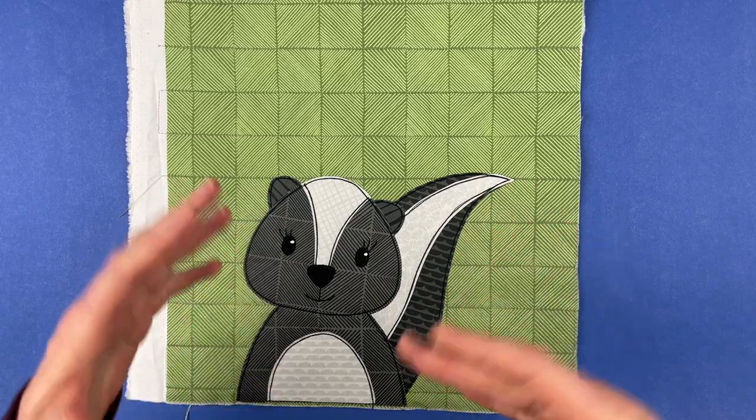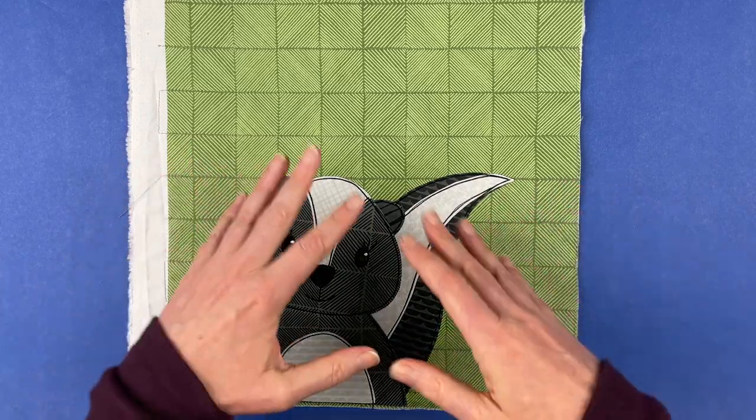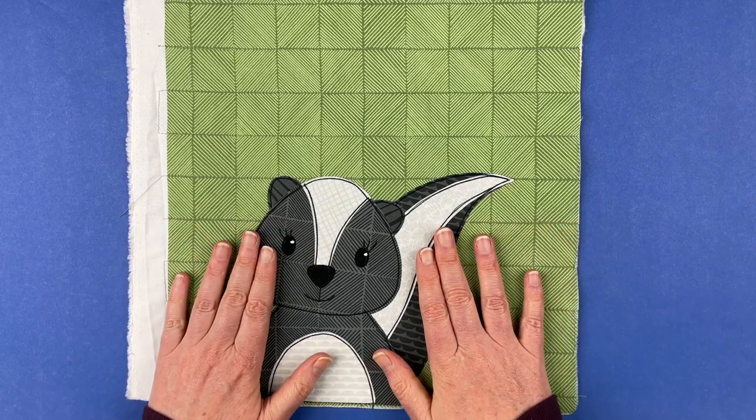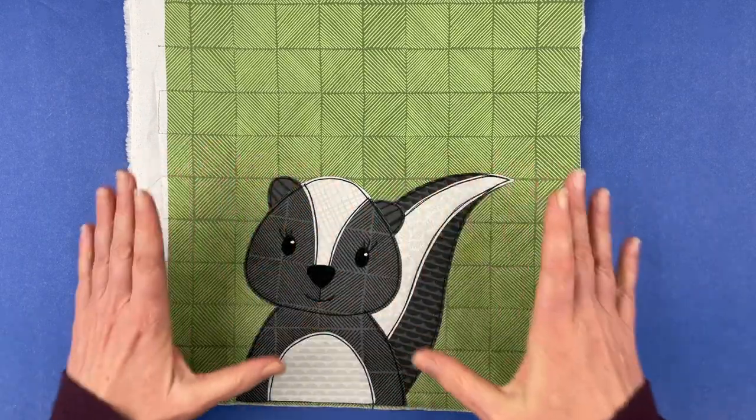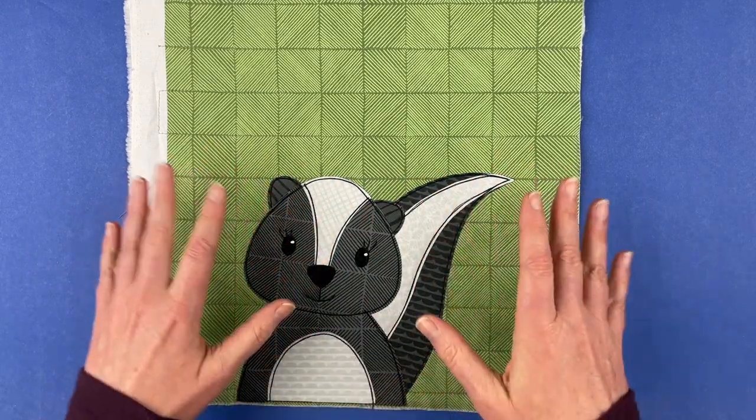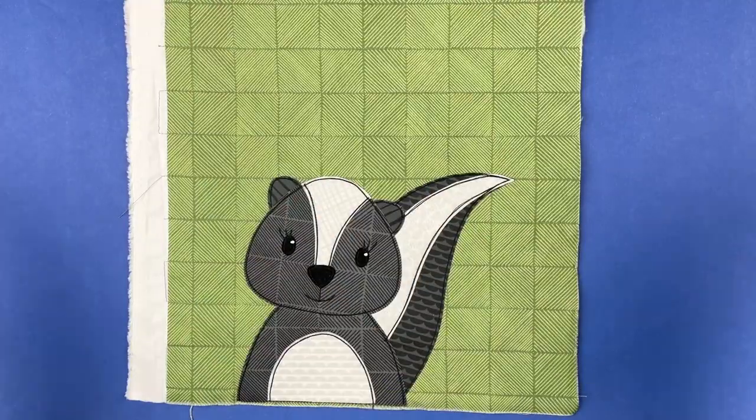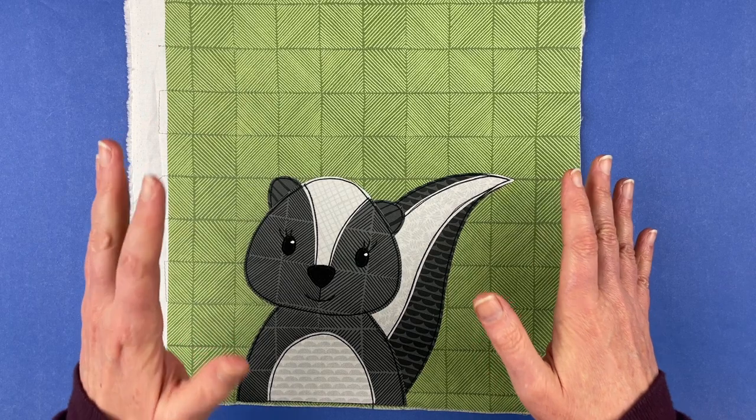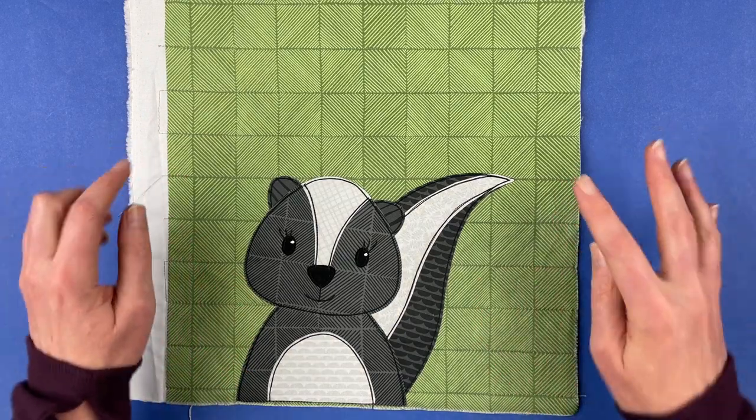This is one block in the Woodland Critters applique pattern, a larger quilt pattern that includes a lot of different animals, but the skunk is also available as a standalone. So you can buy just the skunk pattern if you really just want a whole quilt full of skunks. That would be awesome. Both of those are available at shinyhappyworld.com. Here's how to make it.